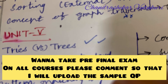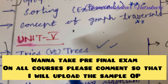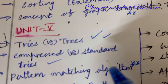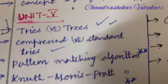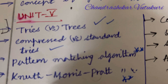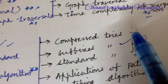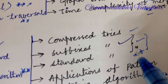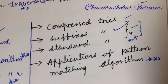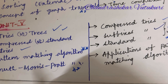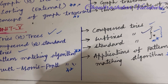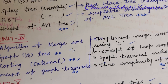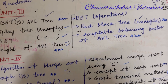Unit 5 is all about tries versus trees: compressed versus standard tries, pattern matching algorithms, and the Boyer-Moore pattern algorithm are the topmost questions. Compressed tries, suffix tries, and standard tries — from these three you will definitely get one question. Application of pattern matching algorithms are set as short or sometimes long questions. If you prepare all the important questions posted in short and long form, everything will appear in tomorrow's question paper.